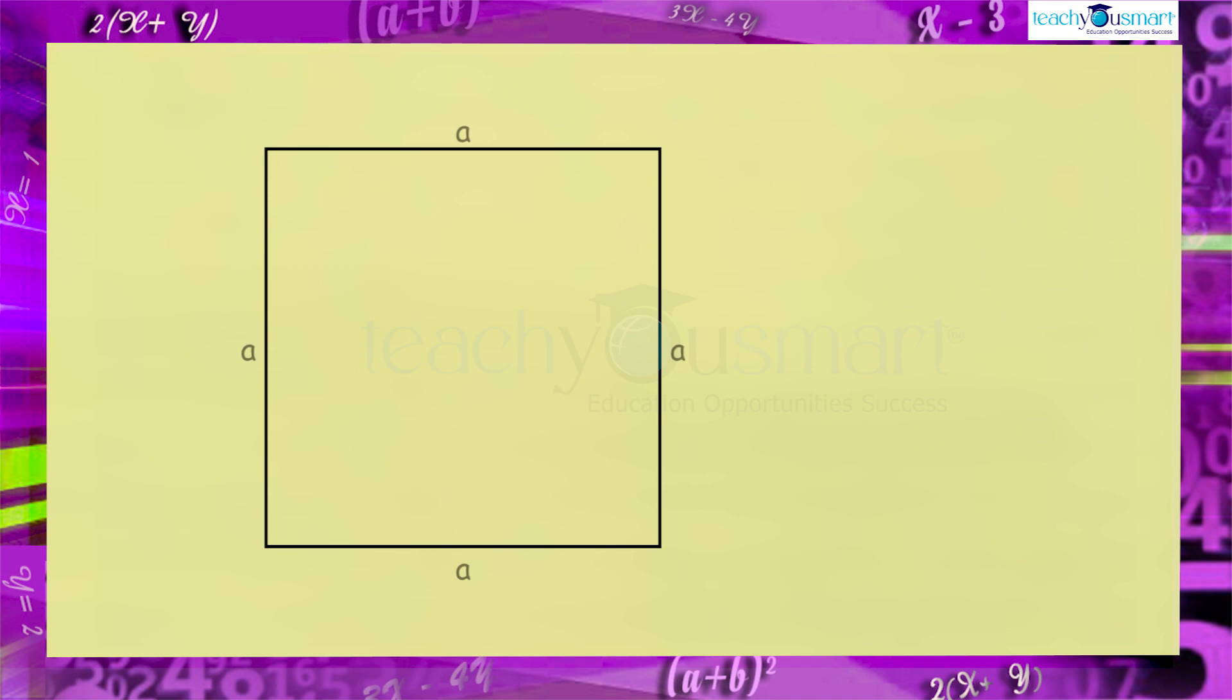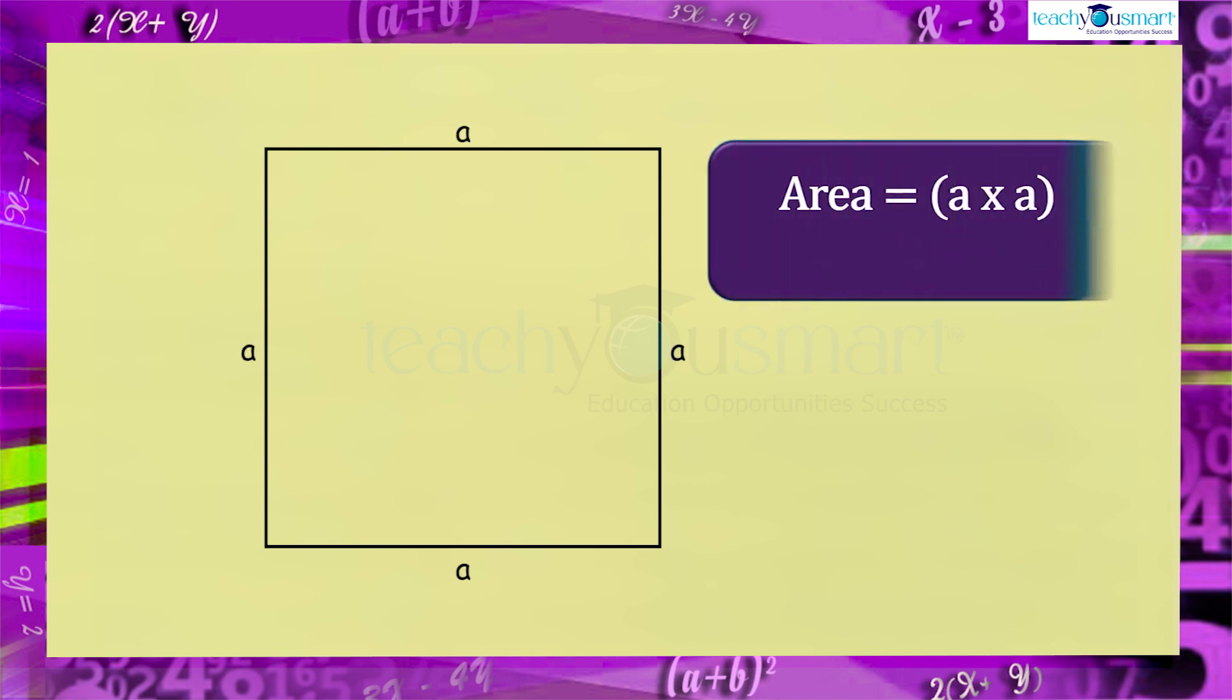Let's take a square of side length a. Area of the square equals a multiplied by a equals a square. Mark a point b on one side such that side a divides into two parts, that is a minus b and b.